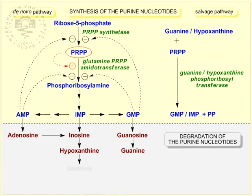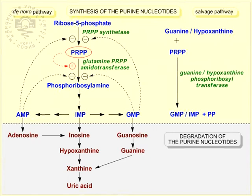Hypoxanthine is oxidized to xanthine by xanthine oxidase, and guanine is deaminated to xanthine. Xanthine is further oxidized by the same xanthine oxidase to uric acid, the end product of purine nucleotide degradation in humans. Uric acid is excreted in the urine.